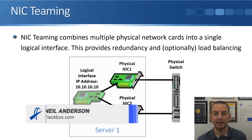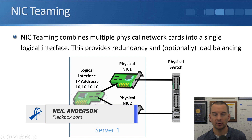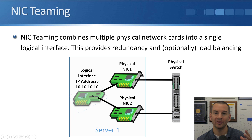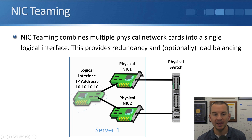You can see in the diagram here I've got my physical server, which has got two different physical network cards in there, and I group those into a single logical interface. What this allows me to do is to have a single IP address, which is 10.10.10.10 in our example, being used across two different physical interfaces.